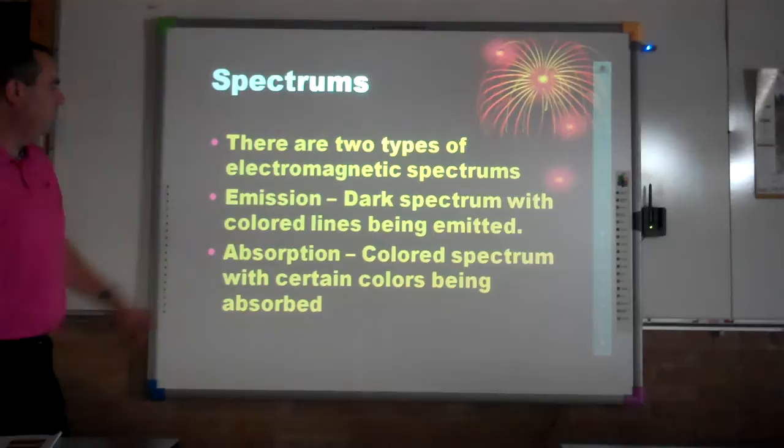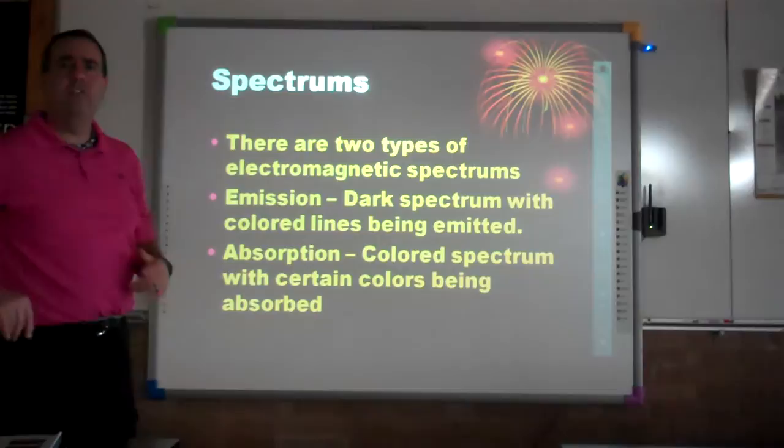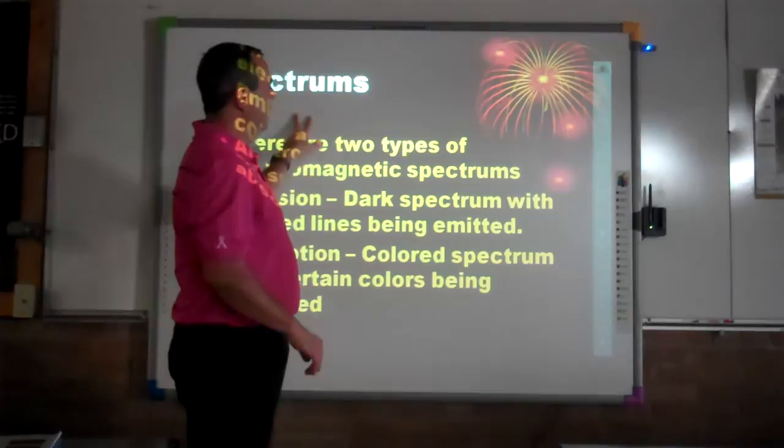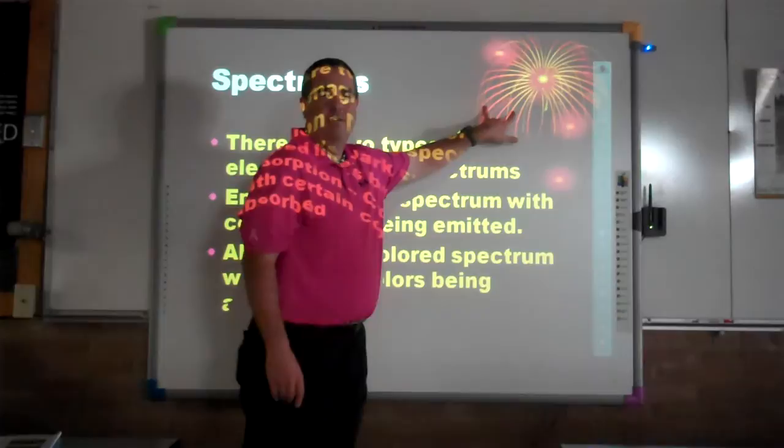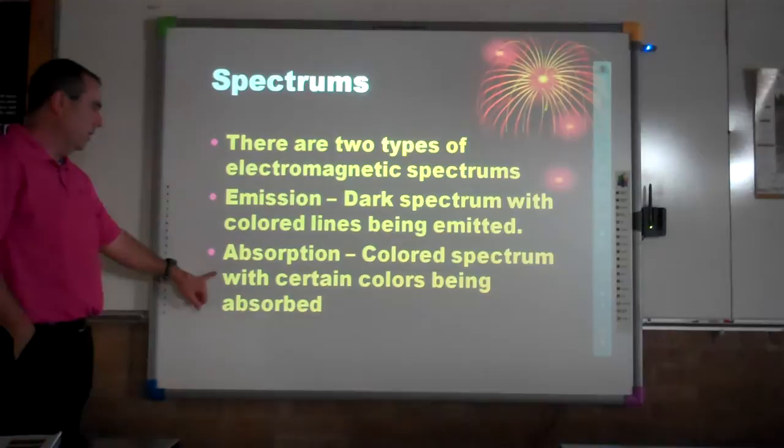The other type is an absorption spectrum. This is the complete rainbow — red, orange, yellow, green, blue, indigo, violet — but all of a sudden maybe a red line is gone, a couple of orange lines are gone, two blue lines are gone. Notice: they're gone because they're being absorbed. So it's the colored spectrum with certain colors being absorbed.